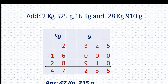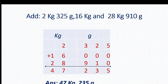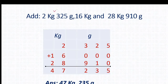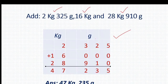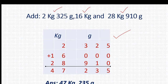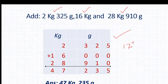Moving to the next page. Next question is add 2 kg 325 gram, 16 kg and 28 kg 910 gram. Here we have again three addends. Our first step is to write the units — kg and gram. After that, arrange these numbers in the column. We will start addition from the gram side. 5 plus 0 plus 0 equals 5. 2 plus 0 plus 1 equals 3. 3 plus 0 plus 9 equals 12 — 2 we write here.